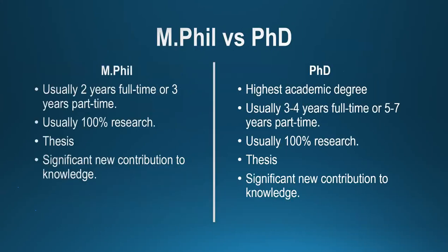What is the difference between MPhil and PhD? A Master of Philosophy is usually a two-year full-time or three-year part-time degree. Both MPhil and PhD are 100% research-based, though there may be coursework components depending on the university. Both are thesis-based, and significant new contribution to knowledge is expected. However, the PhD — which is the highest academic degree — goes into more breadth and depth, with more thorough analysis compared to MPhil. It usually takes three to four years full-time or five to seven years part-time.